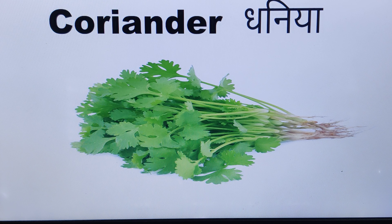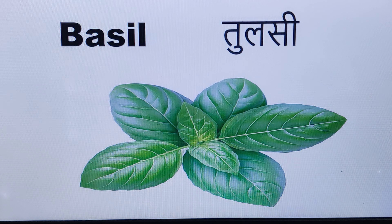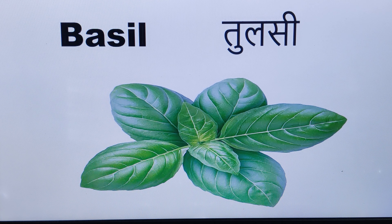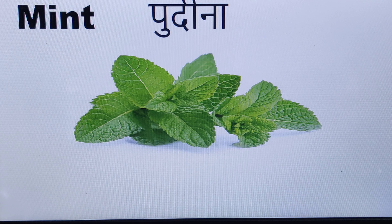Coriander — Hara Dhania. Basil — Tulsi. Mint — Podina.